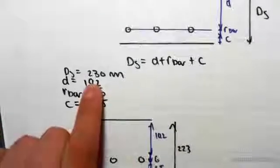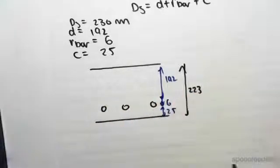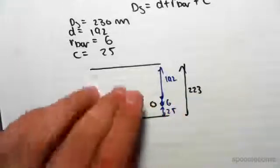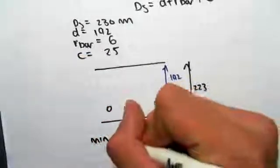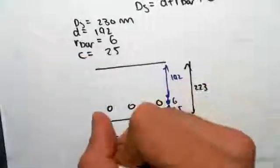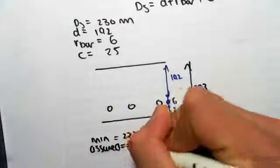Now our assumed depth was 230. So what that tells us is that this 223 is the minimum depth of slab required. So the absolute minimum is equal to 223. We assumed a depth of 230.